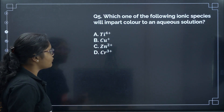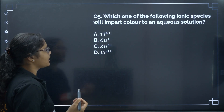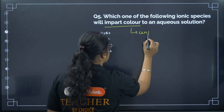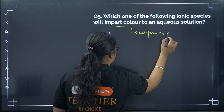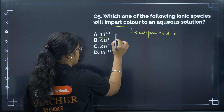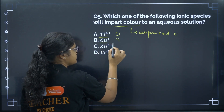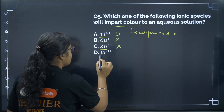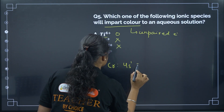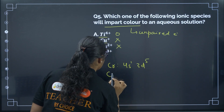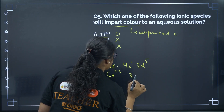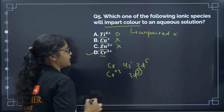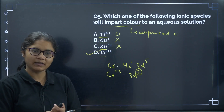Question 5: Which ionic species will impart color to an aqueous solution? For imparting color we need unpaired electrons. Ti⁴⁺ has 0 d-electrons, Cu⁺ has no unpaired electron, and Zn²⁺ has no unpaired electron. Chromium's electronic configuration is 4s¹3d⁵, so Cr³⁺ will have 3d³ — it has unpaired electrons and will show color. The correct answer is option D.